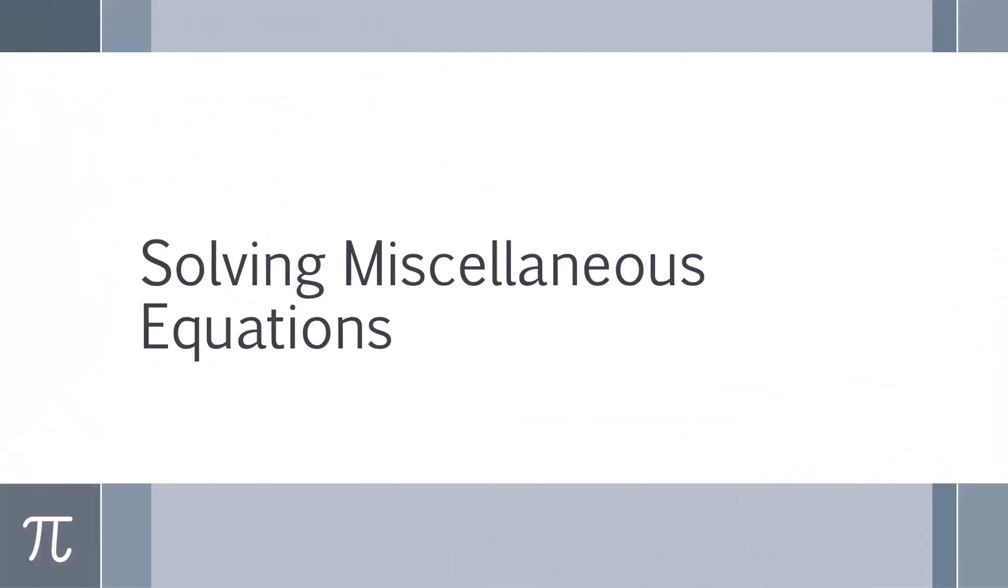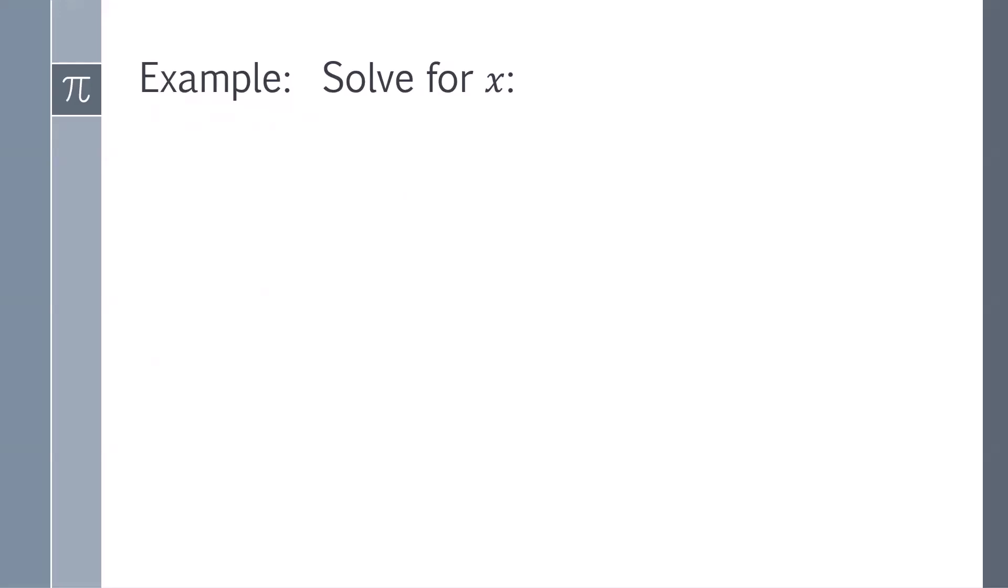Solving Miscellaneous Equations. Solve the following for x: 7x^7 - x^5 = 0.